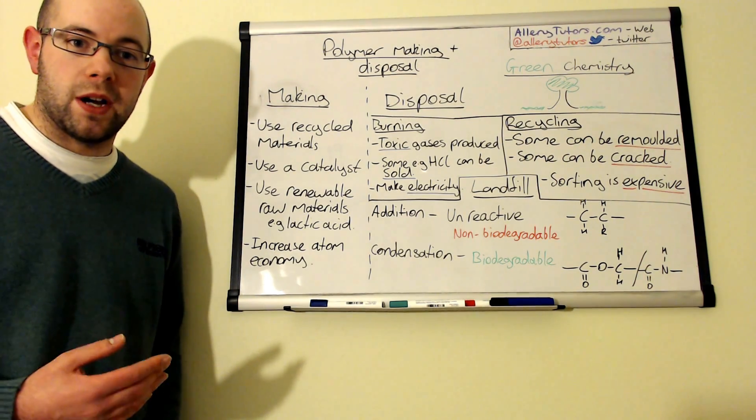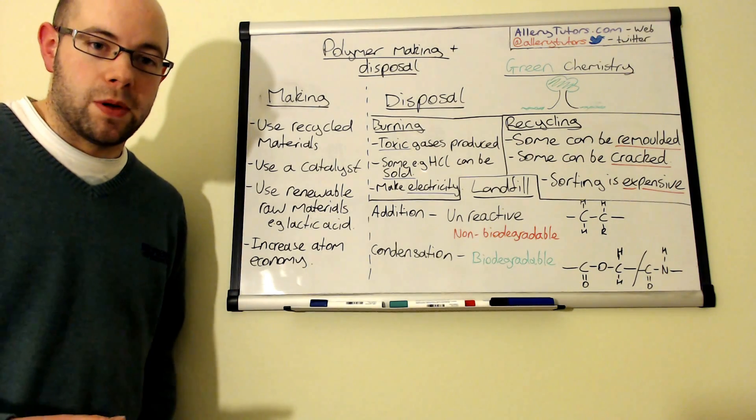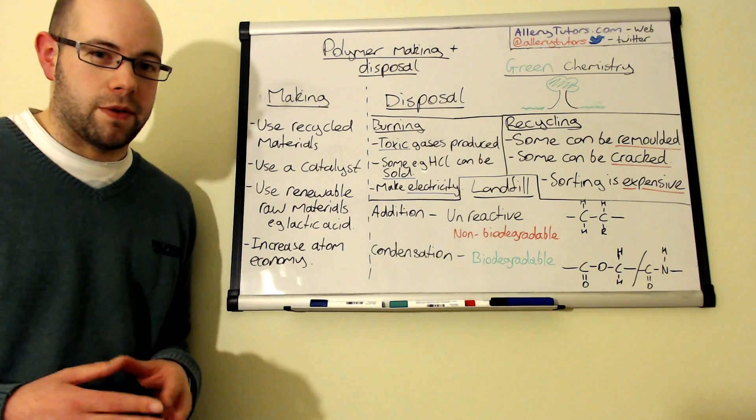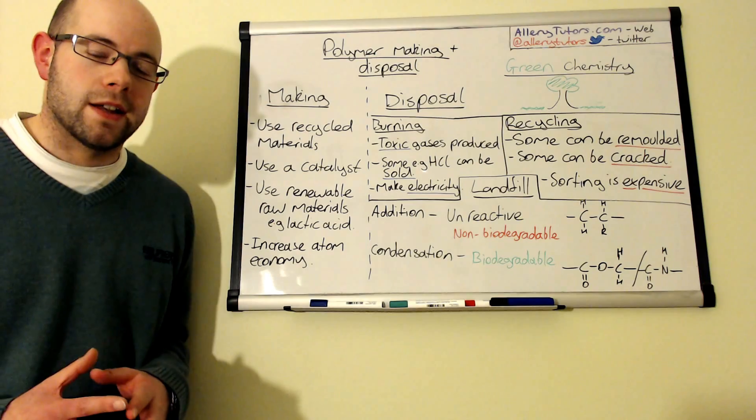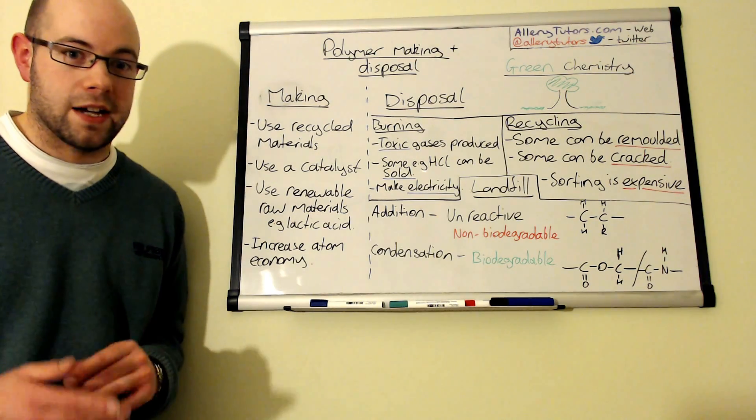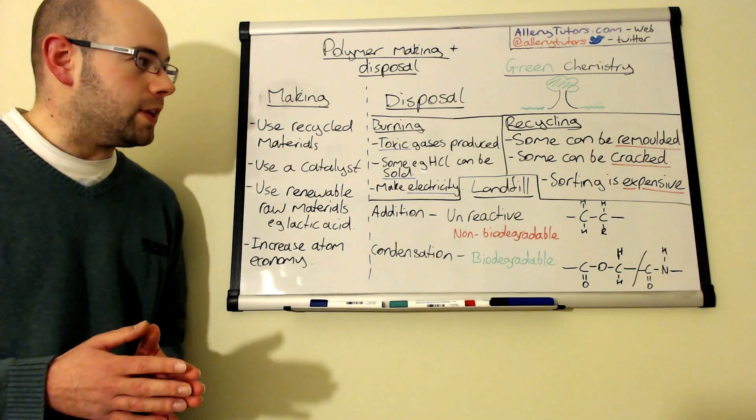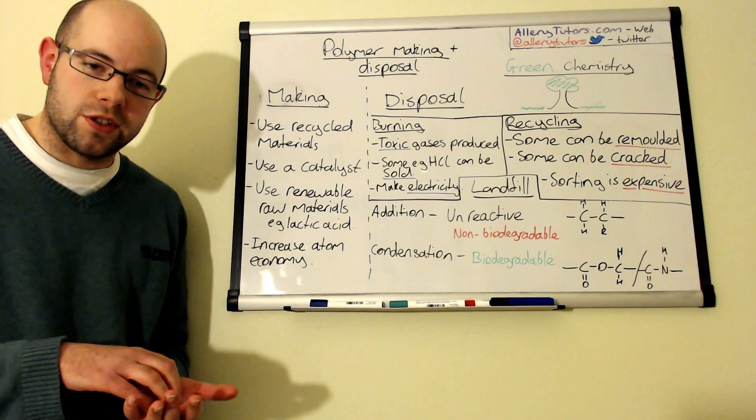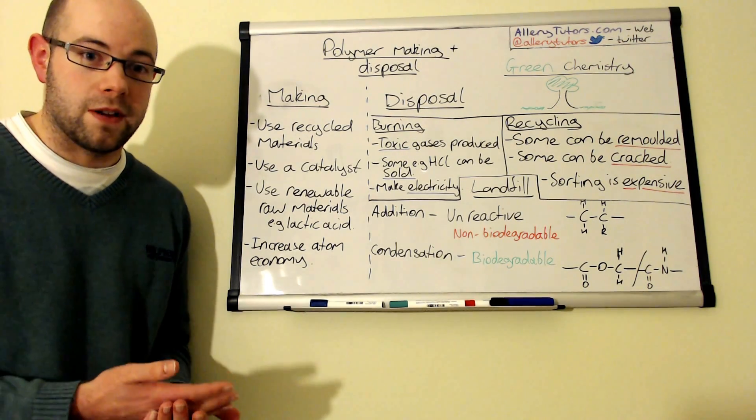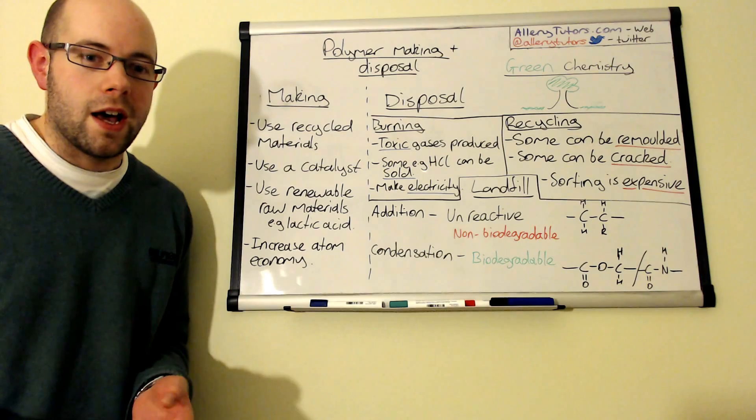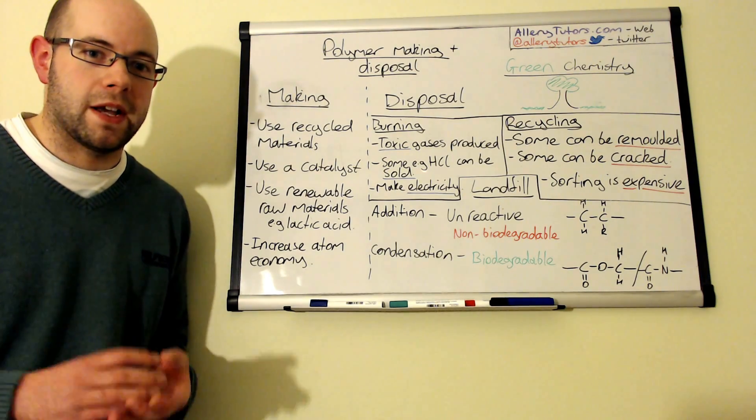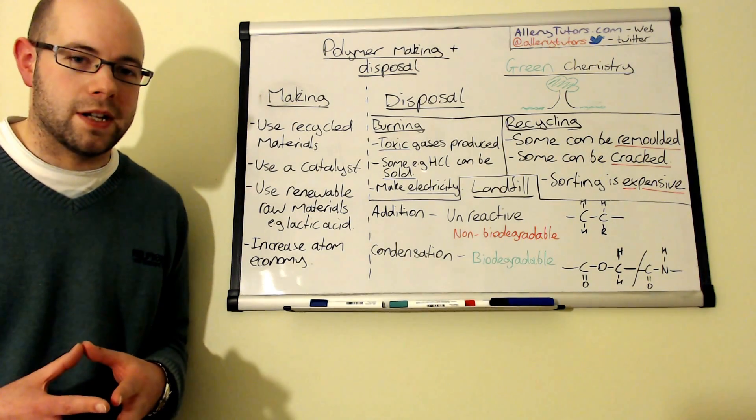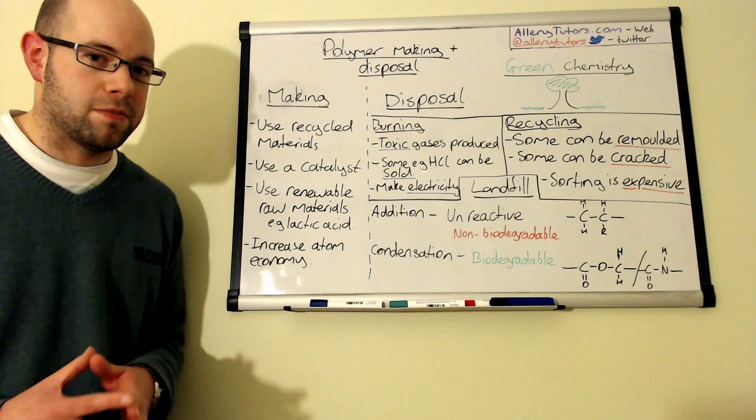Burning could be quite a problem because when you burn plastics they actually give off a lot of toxic chemicals such as chlorine gas and hydrogen chloride gas. These toxic gases are obviously not very useful, but you can actually trap some of the gases. For example, hydrogen chloride can be dissolved in water to make hydrochloric acid that the company can then sell and make some money from it.